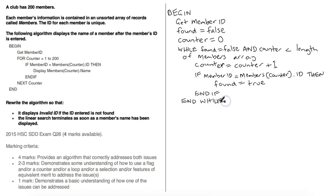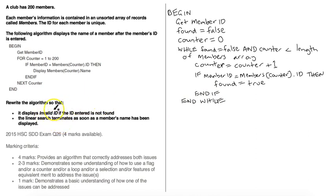As soon as the linear search finds an ID in the members array that matches the input member ID, it sets the found boolean to true. In the next iteration of the while loop, found is no longer equal to false, so the while loop ends. We then go to an if statement after the loop to display the appropriate output — invalid ID if found is false, or the member's name if found is true.